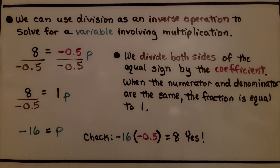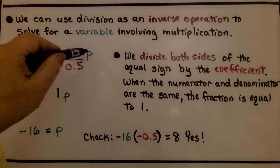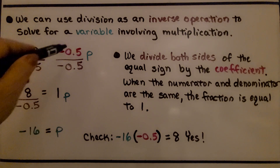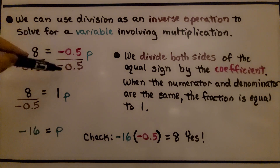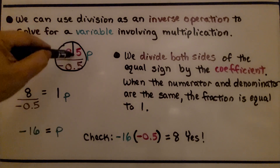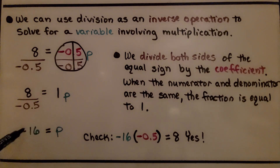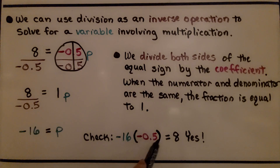We can use division as an inverse operation to solve for a variable involving multiplication. If we have eight is equal to negative five-tenths times p, we divide both sides of the equal sign by the coefficient negative five-tenths. When the numerator and denominator are the same, the fraction is equal to one, so we're creating one p. Here we have eight divided by negative five-tenths — a positive eight divided by a negative five-tenths equals negative sixteen. So p is equal to negative sixteen. We can check it: negative sixteen times negative five-tenths equals eight. Two negatives make a positive, so yes, we did it correctly.